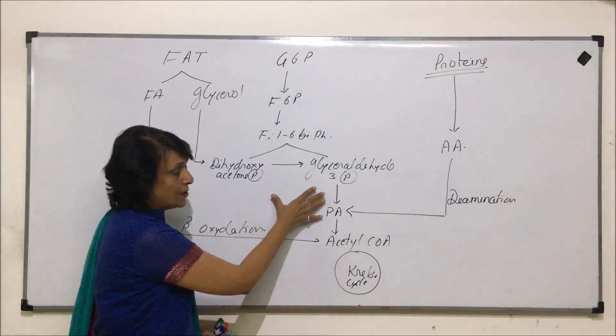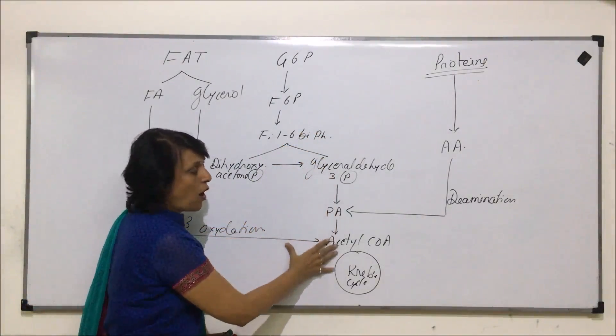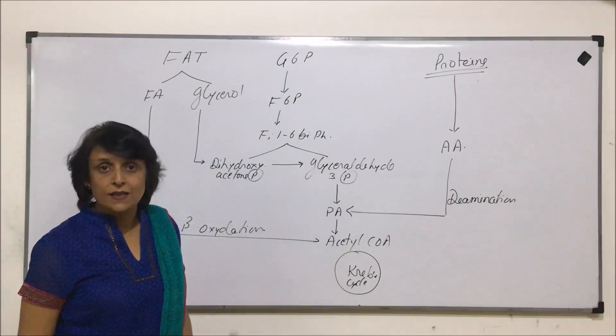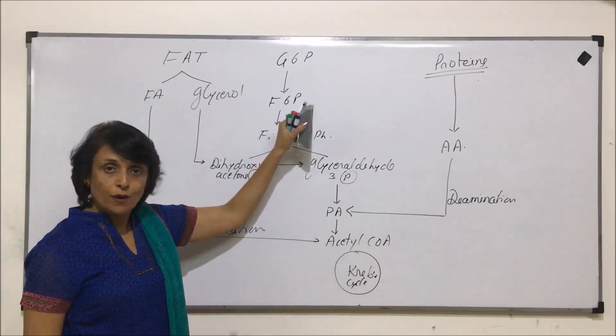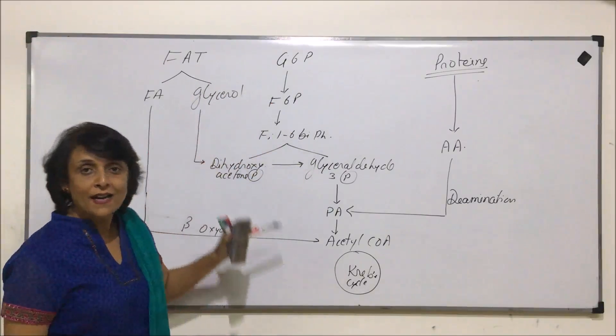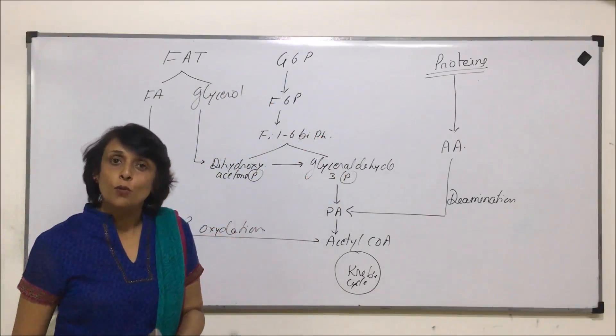But as you can see here, this becomes a common pathway for all three substrates. And first, respiratory substrate is carbohydrate. After that, it is fat which is broken down and at the end it is the protein.